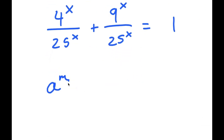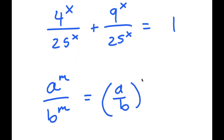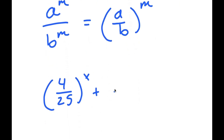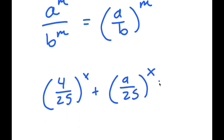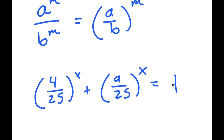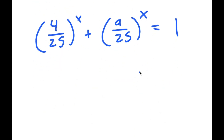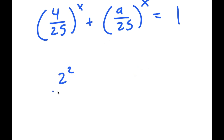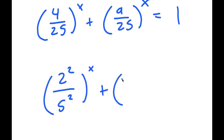Now the 25 and 25 cancel out for 1, so now I have 4 to the power of x over 25 to the power of x, plus 9 to the power of x over 25 to the power of x, is equal to 1. Now if I have something in the form a to the power of m over b to the power of m, this is equal to a over b to the power of m. So 4 over 25 to the power of x, and 9 over 25 to the power of x. From here, I can rewrite 4 over 25 as 2 squared over 5 squared.